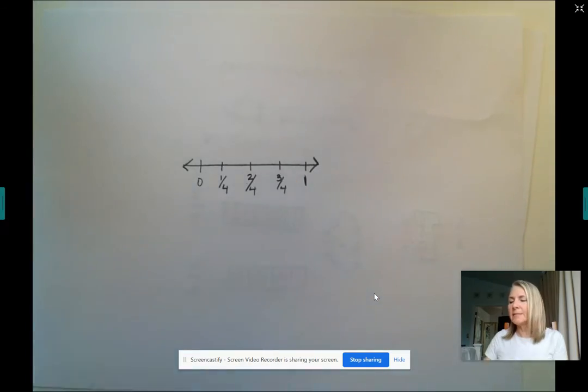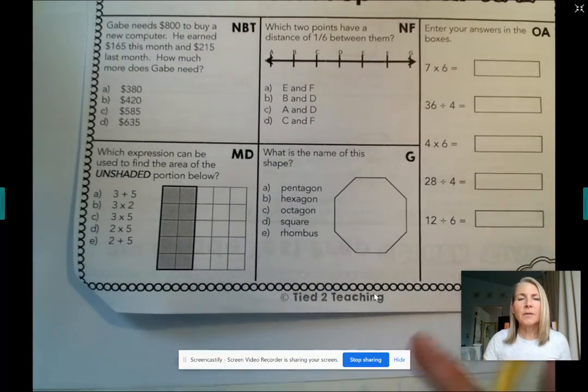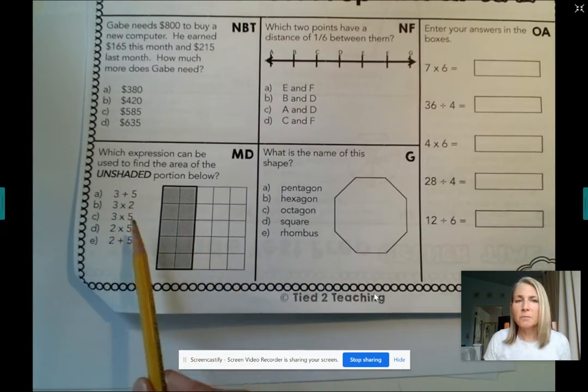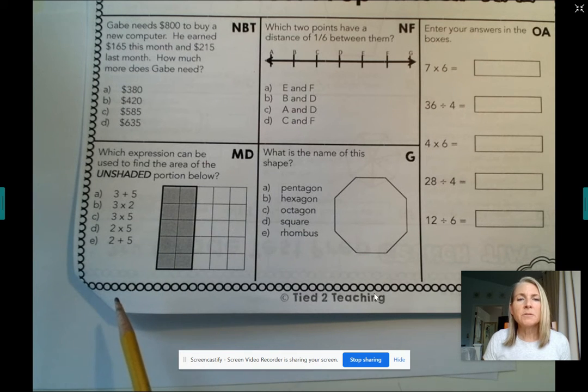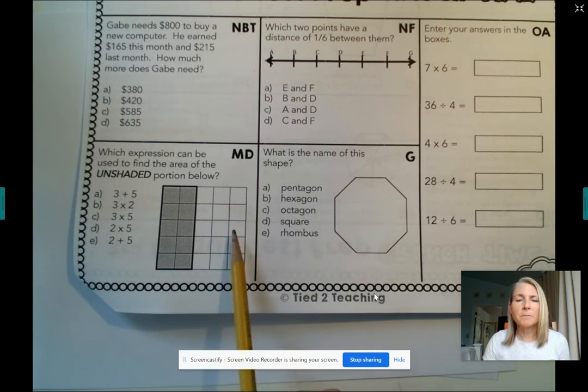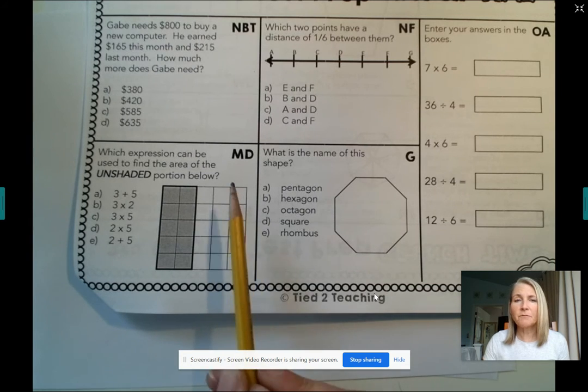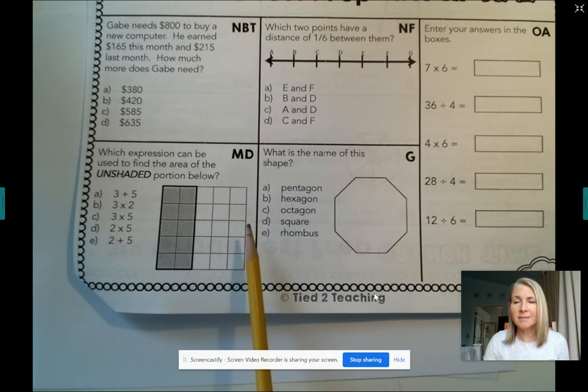Let's take a look. Down here we have, which expression, which math problem, can be used to find the area of the unshaded portion below? So remember, when we're looking at figures that are gridded like this, it's usually area, right?